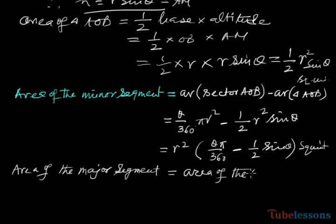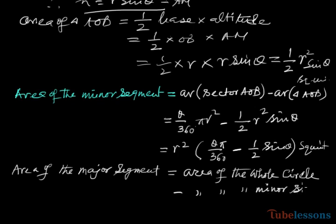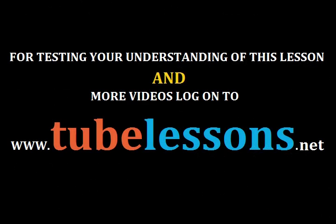The major segment area is the area of the whole circle minus the area of the minor segment. Because the whole circle minus this minor segment area gives us the area of the major segment. Thank you. For testing your understanding of this lesson and more videos, log on to www.tubelessons.net.